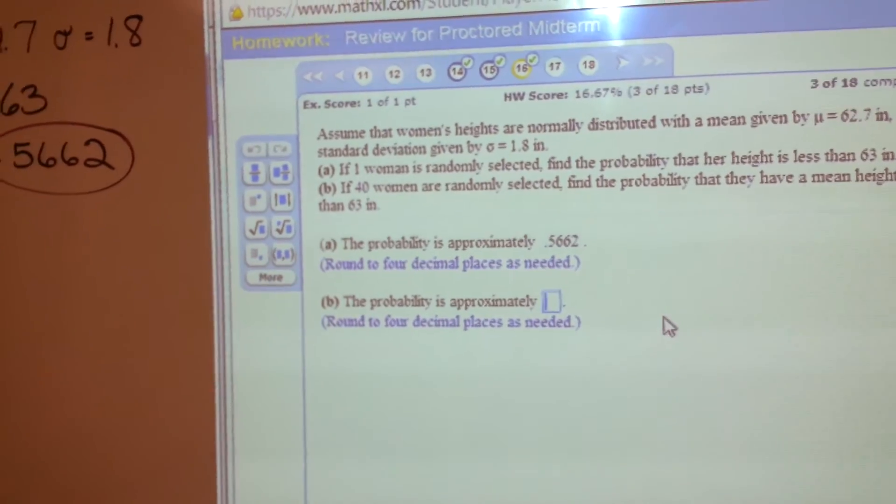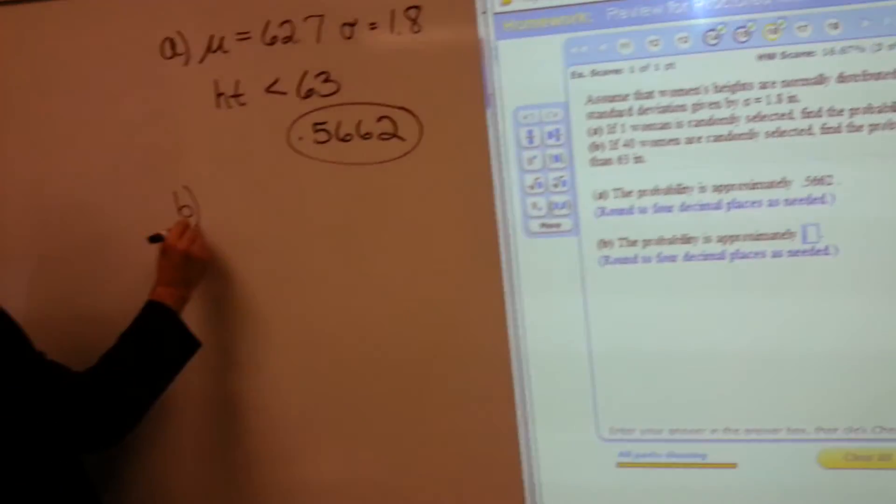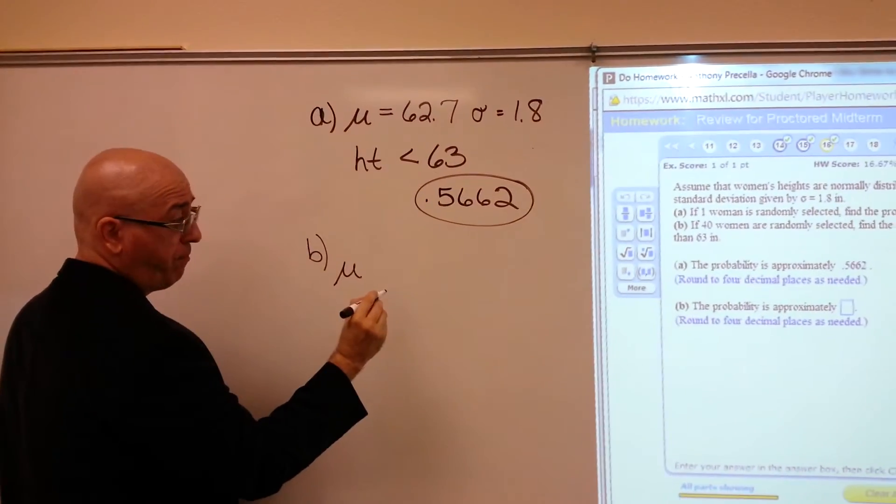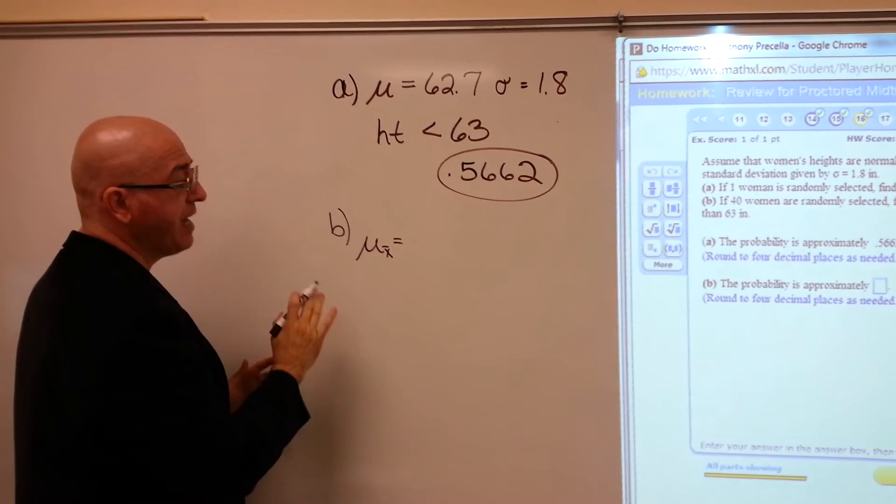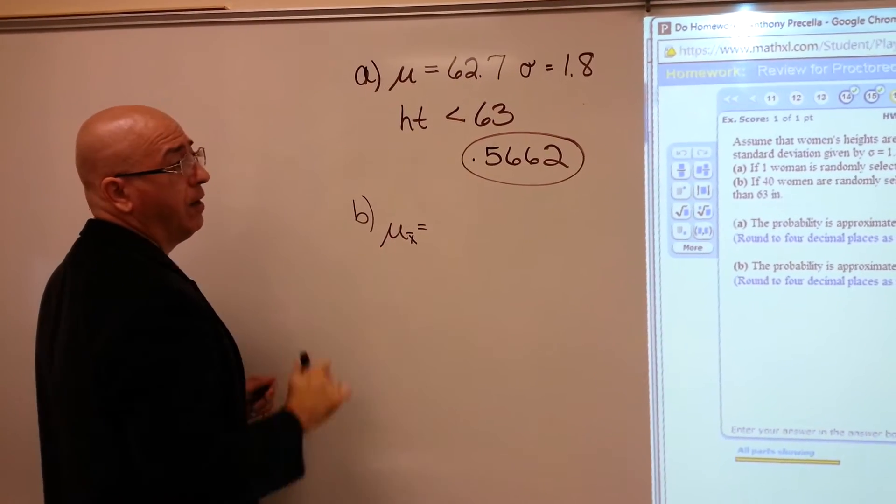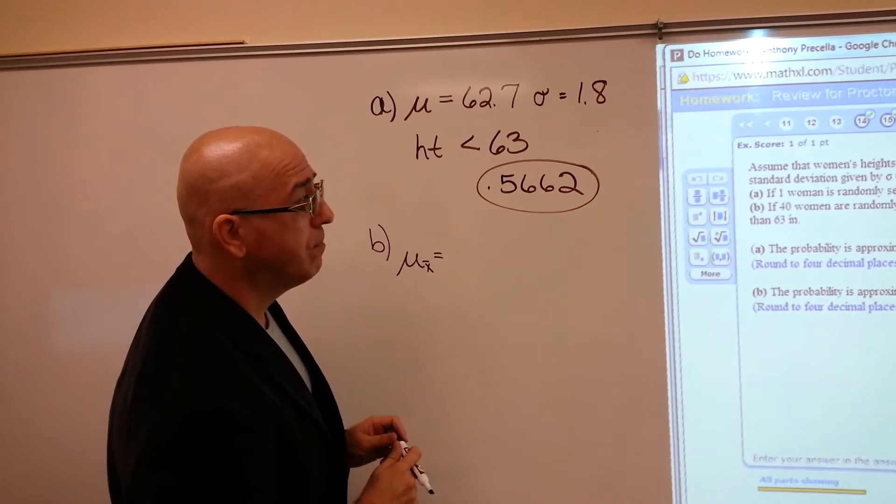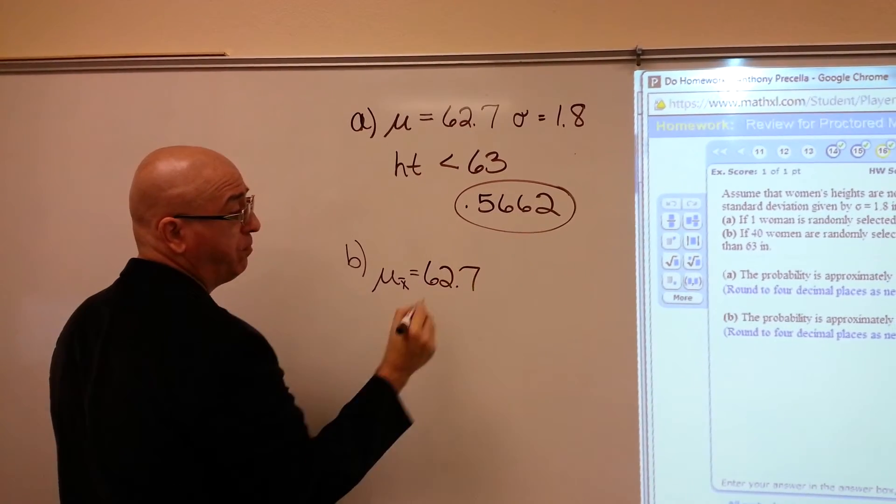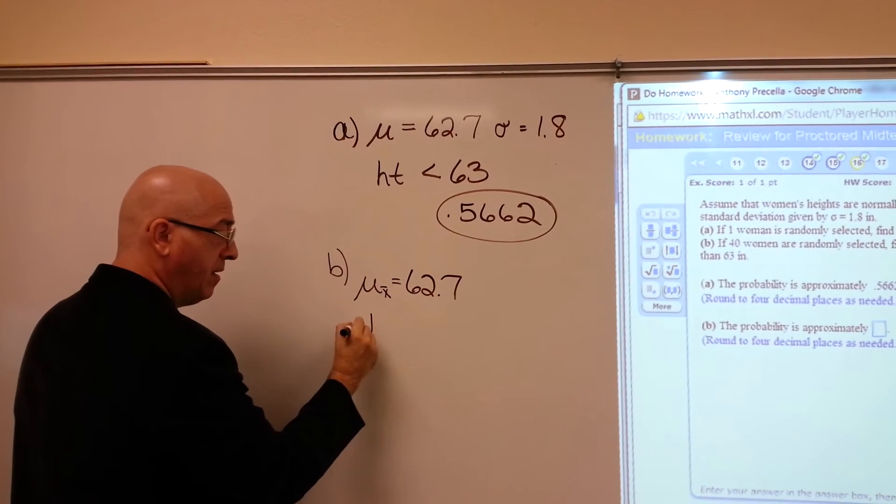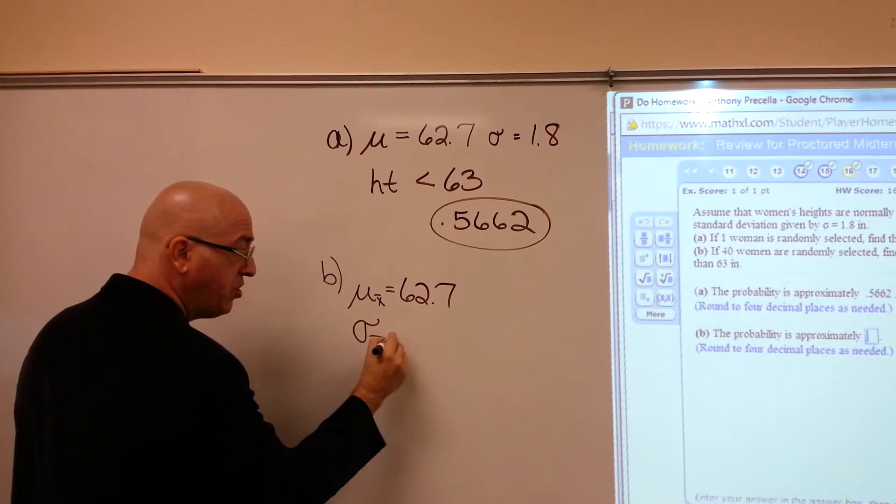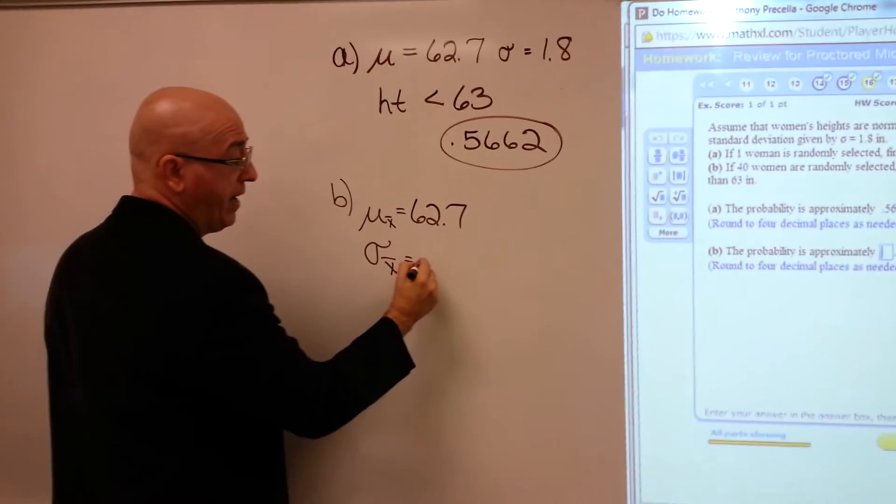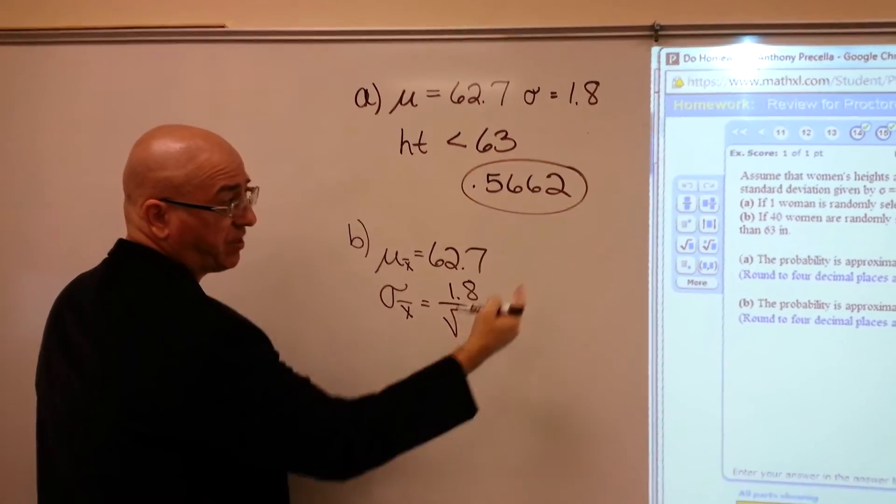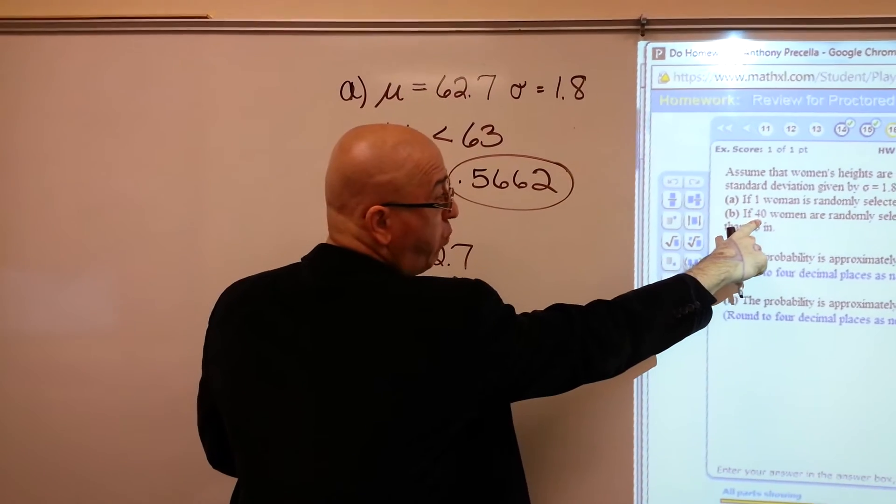Now for part B you're going to use the central limit theorem because it's a sample. So rather than just saying mu, it's the mu of that sample, still by the central limit theorem, 62.7. The standard deviation is not going to just be 1.8. It'll be 1.8 over the square root of that sample size, and it was 40 women.